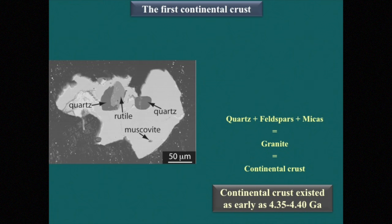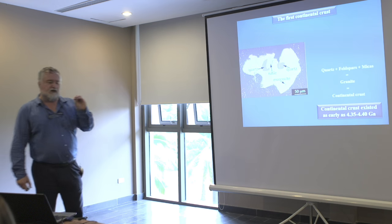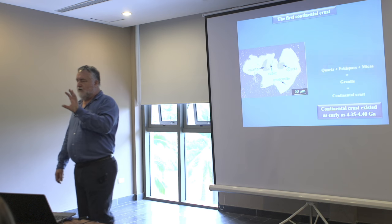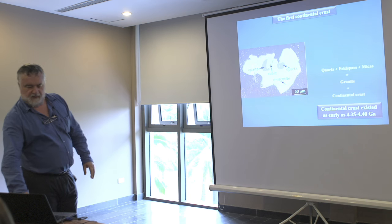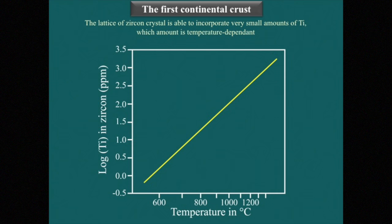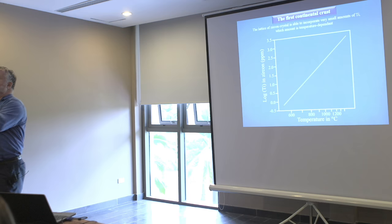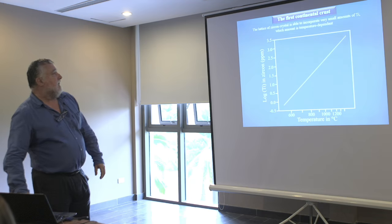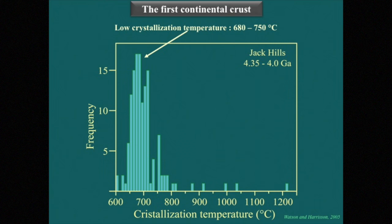This was a very important point: very early, probably less than 200 million years after the formation of the planet, continental crust existed on the surface of the Earth. Something also interesting is that zircon can incorporate titanium into its chemistry, and the amount of titanium it can accept depends on temperature. So by measuring the amount of titanium in a zircon crystal, you can determine its temperature of crystallization. The result was extremely surprising — we expected very high temperatures on the early Earth, but in fact the temperature of crystallization was very low: 680 to 750 degrees.